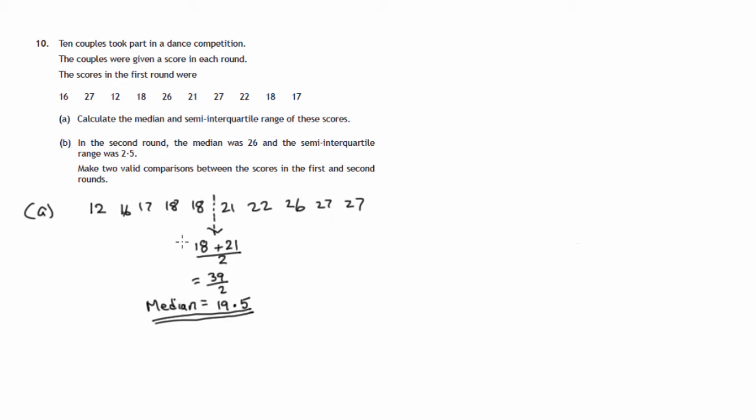Now the semi-interquartile range. We look at the lower half of the data and we basically work out the median of that. Now there's five items in the data there, so the middle one is 17. That's what's called the lower quartile.